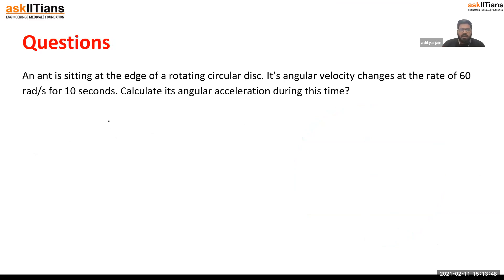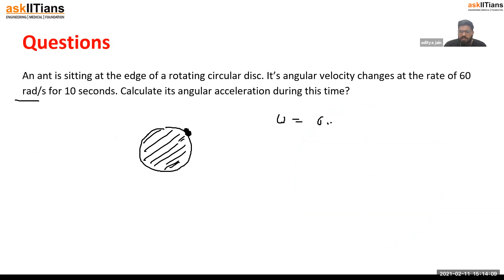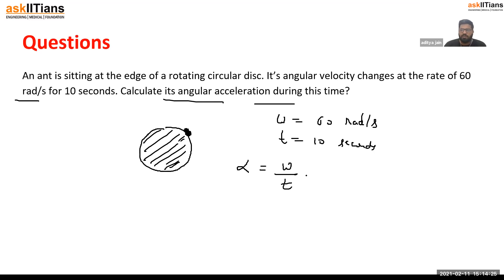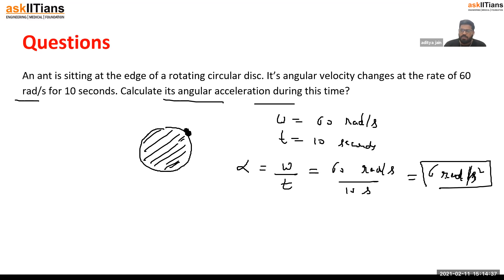Question: an ant is sitting at the edge of a rotating circular disc. Its angular velocity changes at the rate of 60 radians per second over a time of 10 seconds. What is its angular acceleration? Using the formula: α = Δω/t = 60/10 = 6 radians per second squared. The angular acceleration during this 10-second interval is 6 rad/s².